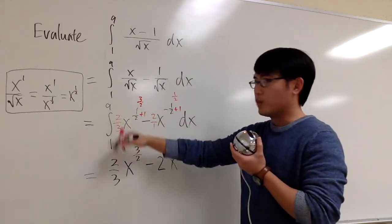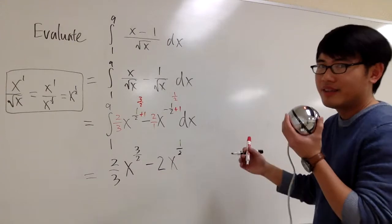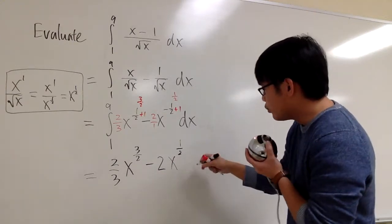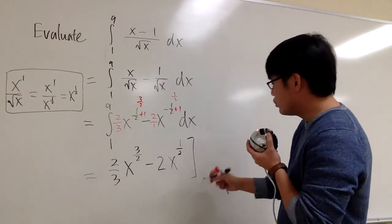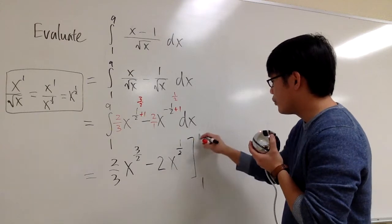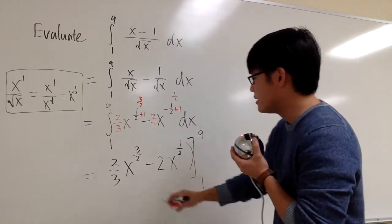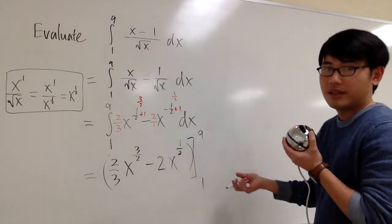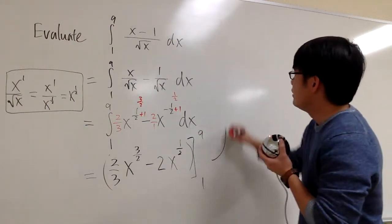And because we are doing the integral with numbers right here, the definite integral, we don't need to worry about the plus C. We just need to do a bracket from one to nine. And then make sure that we use the parentheses accordingly. So I put it right here, like this.